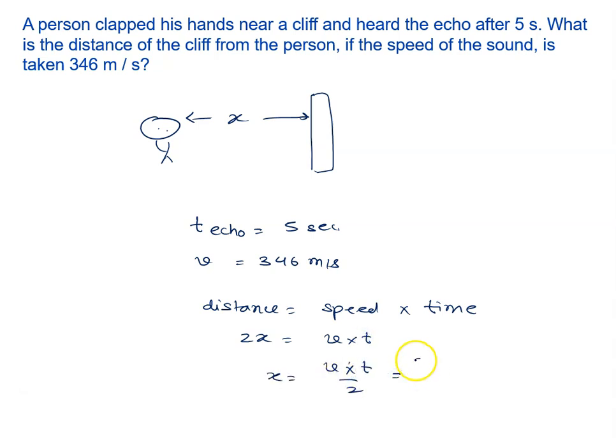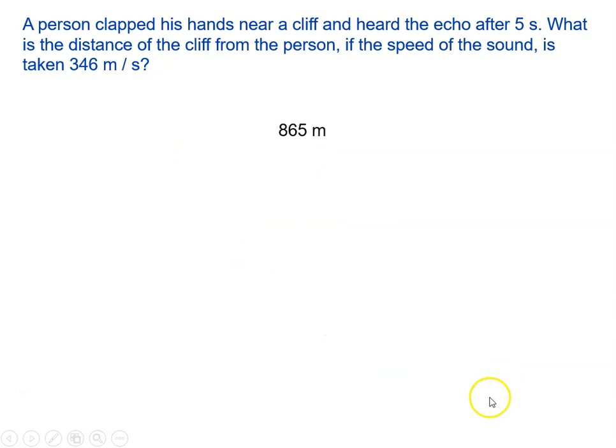v is given to us as 346 and t is given to us as 5 by 2. After the solution we will get 865 meters. So the right answer to the problem is 865 meters.